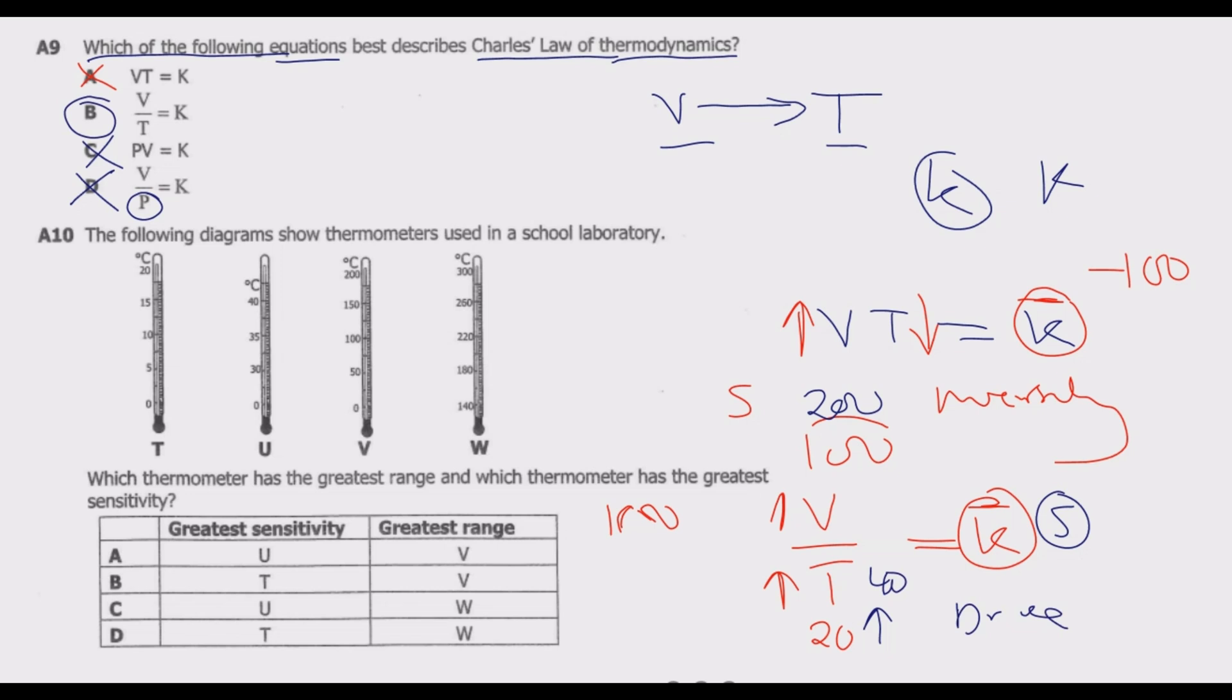We move to question 10. The following diagrams show thermometers used in a school laboratory. Which thermometer has the greatest range and which thermometer has the greatest sensitivity? The question requires us to identify which one has the greatest range and which has the greatest sensitivity. The greatest range is basically the biggest difference between the minimum value and the greatest value.